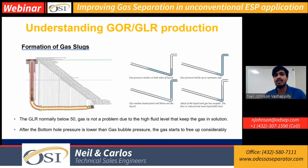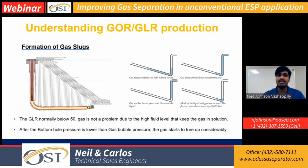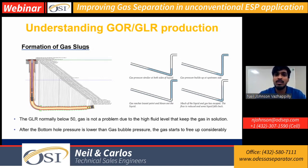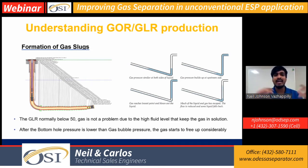In higher GLR or GOR wells, the bottom hole pressures go way lower than the bubble point pressure. That's exactly why we see a lot of initially entrained gas starting to free up. And before it reaches the kickoff point, we see a lot of turbulent gas slugs and gas bubbles fully freed up — and that is exactly what the ESP has to handle. Unless it's either separated or gotten back into solution, it's going to be very difficult for the ESP to perform.